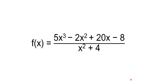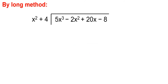Now, let's consider another example: 5x cubed minus 2x squared plus 20x minus 8, all over x squared plus 4. As you can see, my divisor has a degree of 2. So, let's see how we do the long method.